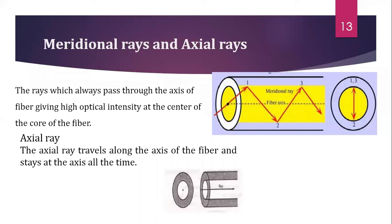At each reflection, the meridional ray passes through the axis of the fiber — this is the key property of meridional rays. Since meridional rays lie in a single plane, they are easy to track. Meridional rays take a comparatively lesser ray path because of a lesser acceptance angle. These rays travel slower because of total internal reflection.